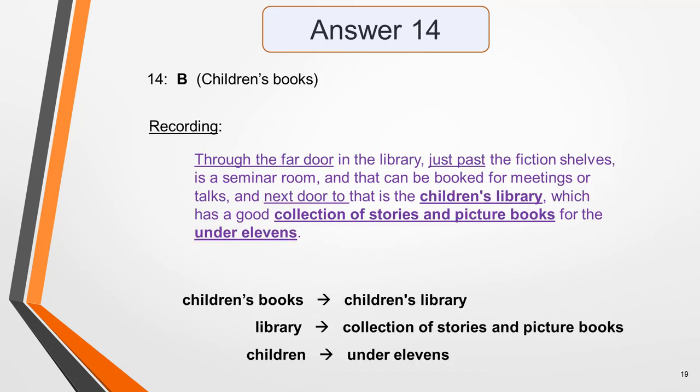Answer 14 is B — children's books. Here's the sentence: 'Through the far door in the library, just past the fiction shelves, is a seminar room that can be booked for meetings or talks. And next door to that is the children's library, which has a good collection of stories and picture books for the under-11s.' Synonyms and related words have been used to paraphrase the information — children's books are referred to as the children's library, and children themselves are referred to as under-11s.